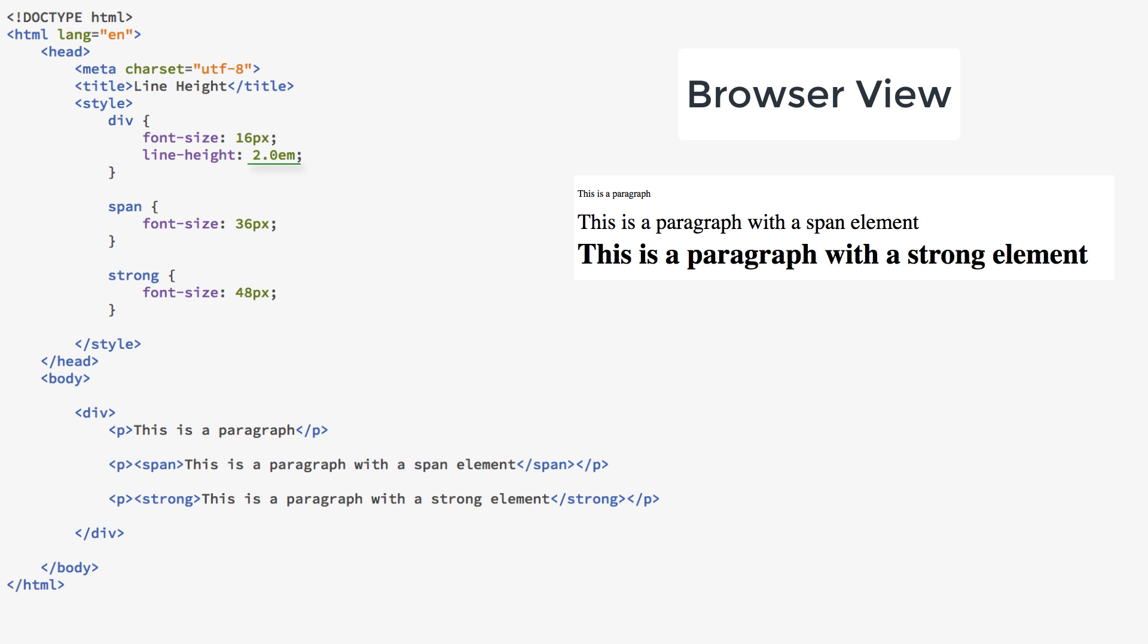Now, if I add a unit to the line height, that will cause all the line heights to be the same because they are inheriting the calculated line height from the div, which is 2 times 16. The line height of 2 and the font size of 16 pixels.